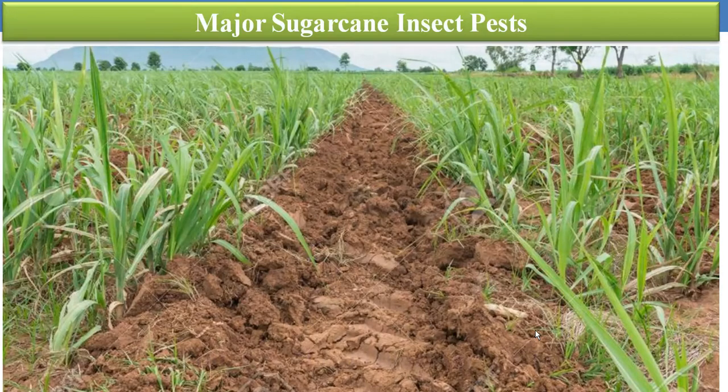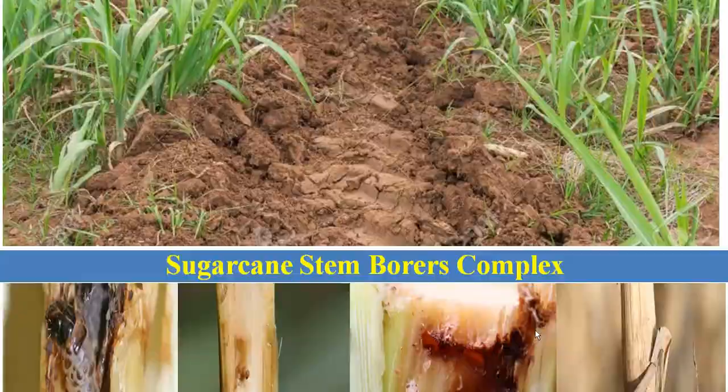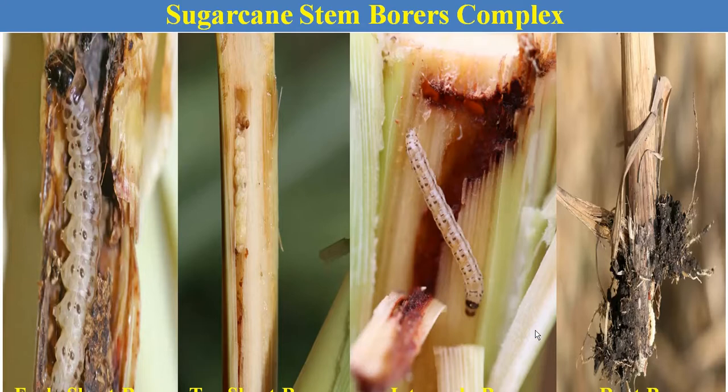Which are the different insect and non-insect pest populations which attack sugarcane crops and cause yield loss? The first category of pests, according to their feeding habits, is the sugarcane stem borer complex. In that complex, there are four major borers which attack sugarcane and cause severe yield loss: the early shoot borer, top shoot borer, internode borer, and root borer. All these borers come under the order Lepidoptera, and hence the damaging stage is the caterpillar.